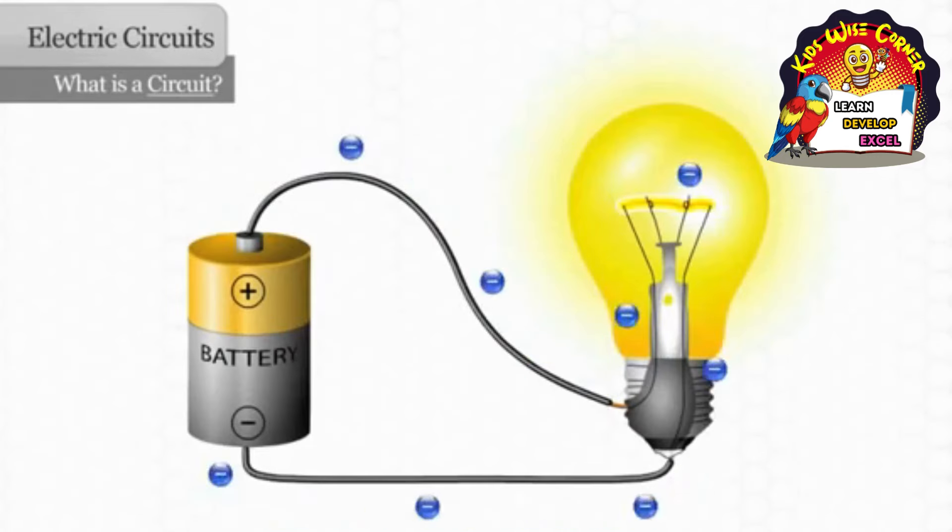Let's begin by looking at how a simple circuit allows a light bulb to light. A circuit is a route through which electrical current can flow. In our example, electrons flow from the negative side of a DC cell battery to a conducting material on the base of the bulb.